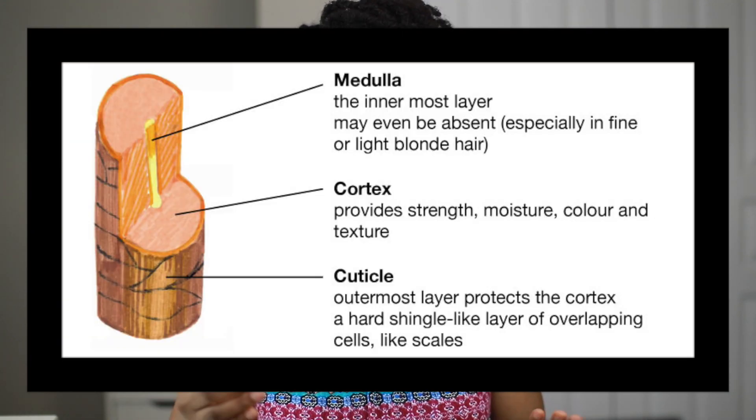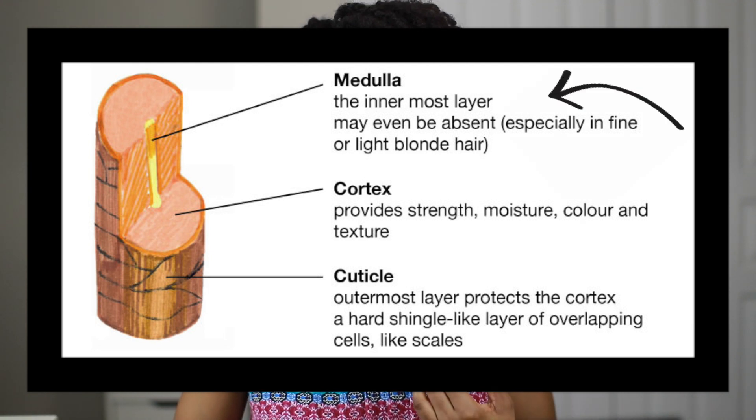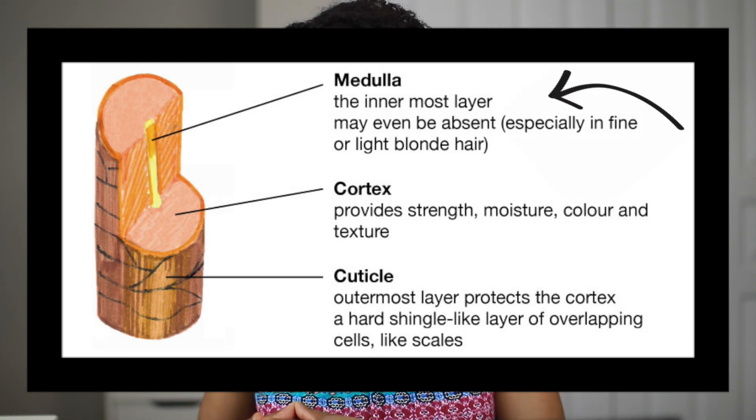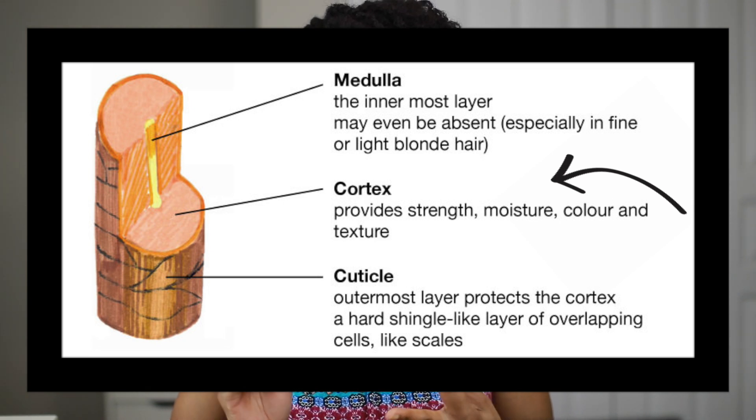Understanding your hair porosity helps you understand how to moisturize your hair and which products to use, so that you can take better care of it. Let's get a little scientific here. When talking about the hair strand and porosity, we focus on the outermost layer called the cuticle. Your hair strand is actually composed of three different components: the medulla, which is the innermost layer, and the cortex, which provides strength, moisture, color, and texture.